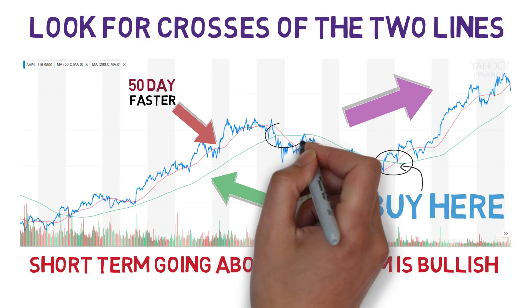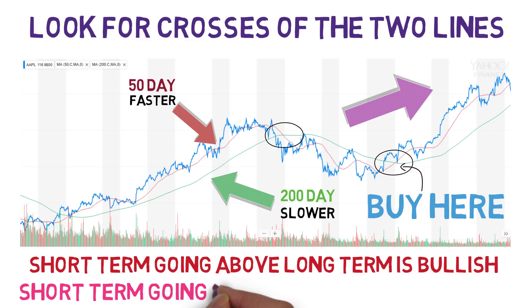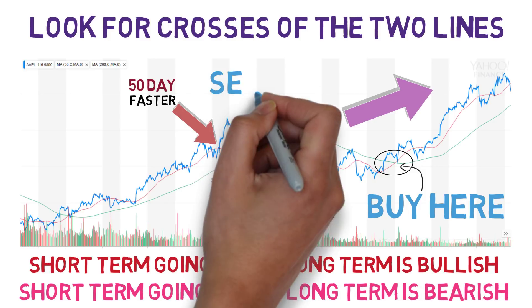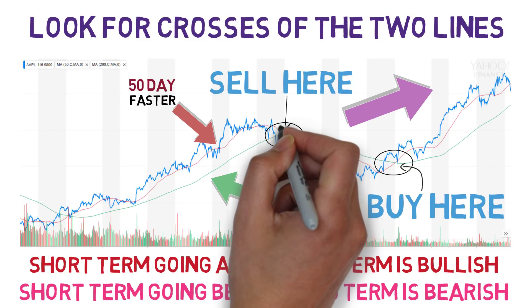The opposite is also true. As we can see here, the 50-day crossed with the 200-day but went downwards, meaning the short-term price is going down. This could be used as an indicator to sell.